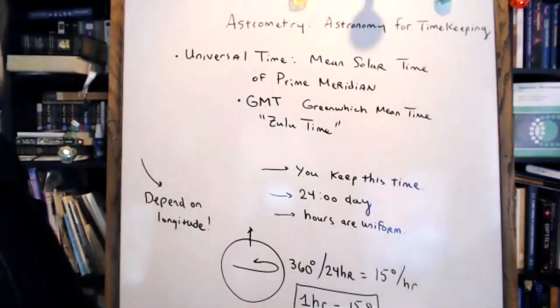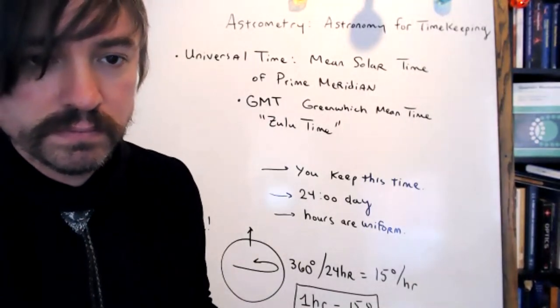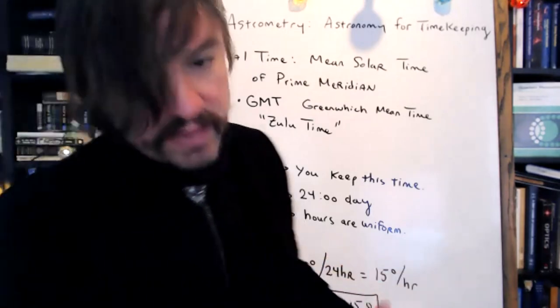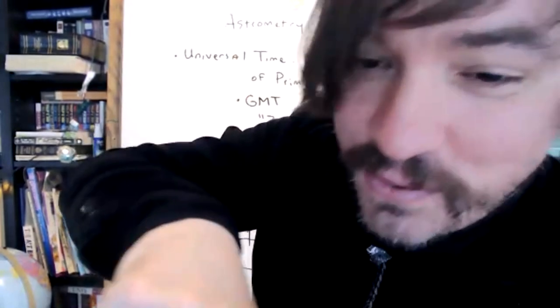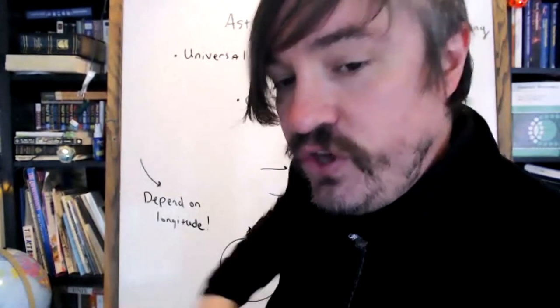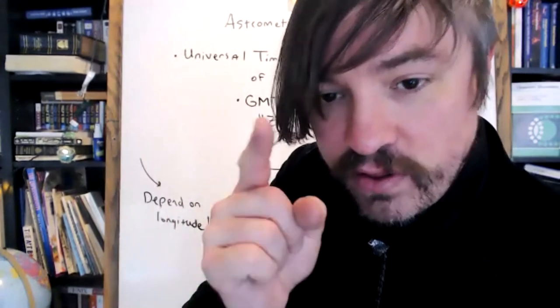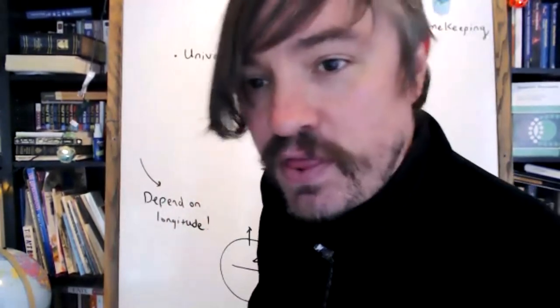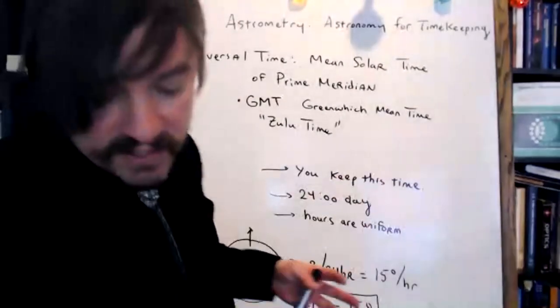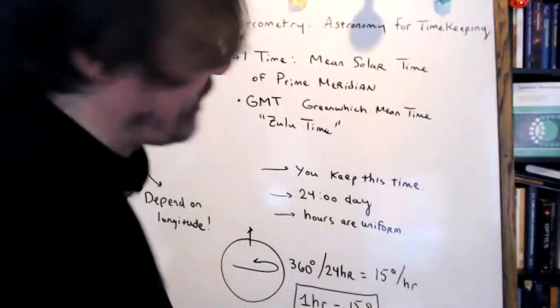A student asks about GMT watches. It can be helpful to have a mechanical watch that keeps track of Greenwich Mean Time — it's classy if you're a nerd, but more importantly, if you know the time in Greenwich, England, you can compute your longitude based on the time of day. That's one of the things you'll learn how to do today.